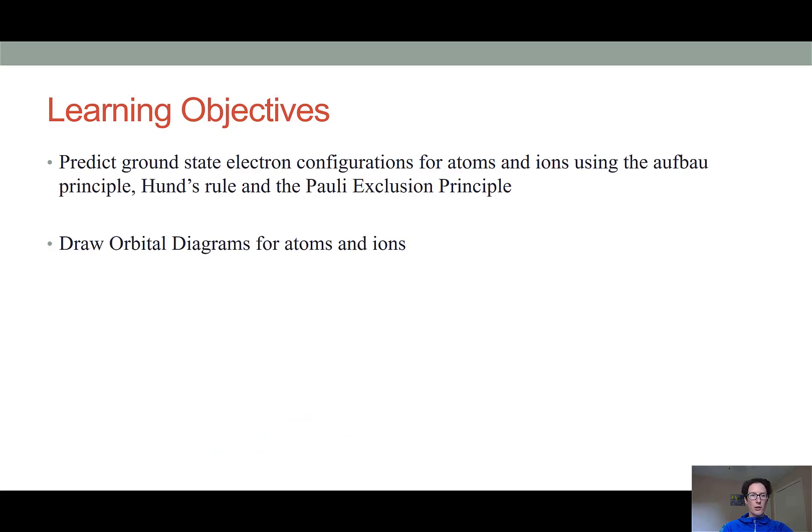To do that, we're going to build upon our learning objective from the previous video, where we looked at the ground state electron configurations for atoms using the Aufbau principle, and now add in Hund's rule and the Pauli exclusion principle. From this, we will then learn a notation system for describing the ground state electron configuration, which is known as an orbital diagram.